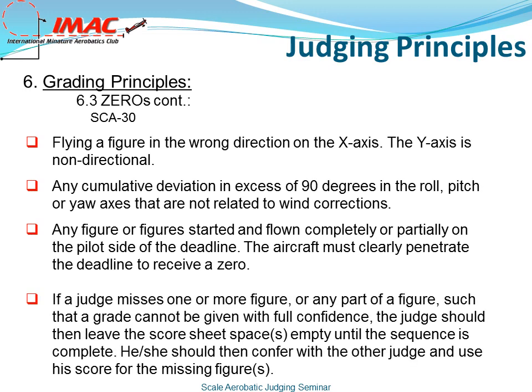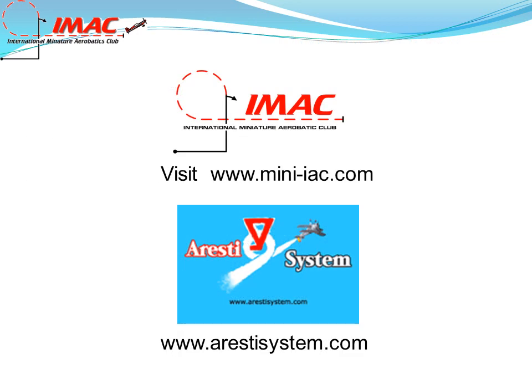If a judge misses one or more figures, or a part of a figure, such that the grade cannot be given with full confidence, the judge should leave the score sheet spaces empty until the sequence is complete, then confer with the other judge and use his score for the missing figure. If both judges miss a figure, ask the pilot to re-fly so he can receive a proper score. For more information, log on to mini-iac.com or arresteesystem.com.